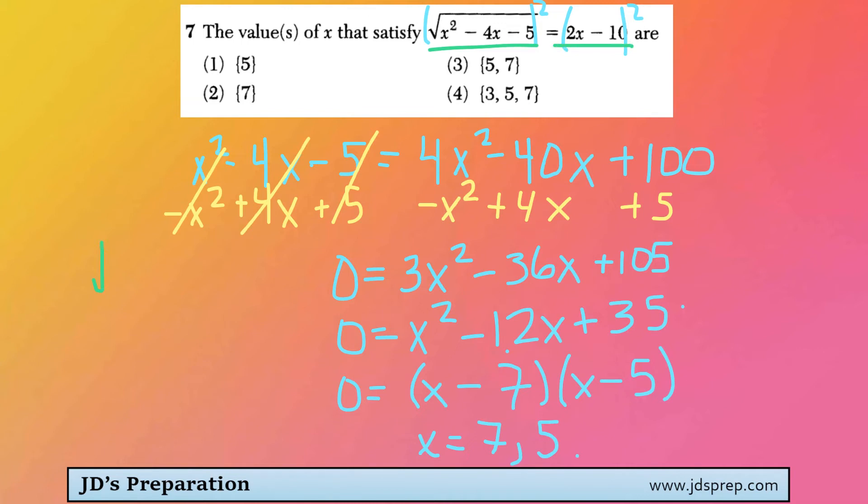So for the first one, let's test 7. We'll be taking the square root of 7 squared minus 4 times 7 minus 5. And that becomes the square root of 16, which is 4.